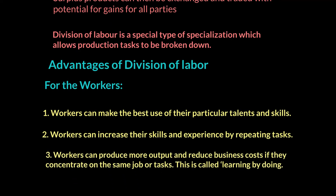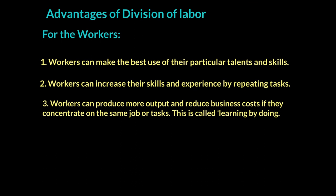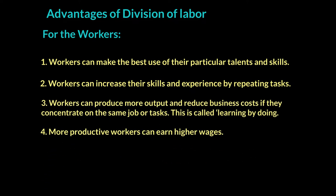Thirdly, workers can produce more output and reduce business costs by concentrating on one task only. If the same worker is producing more output, the cost per unit goes down due to division of labor and learning by doing. Lastly, by making the business more money through reduced costs, workers can also be paid higher wages, so both productivity and earnings can go up.